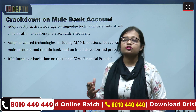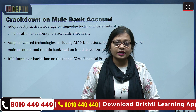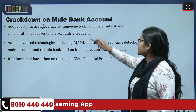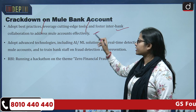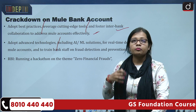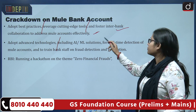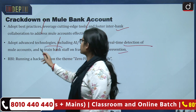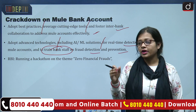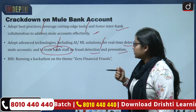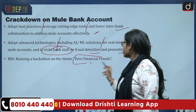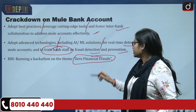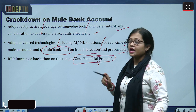The RBI is asking banks to be more vigilant and follow certain guidelines so that mule bank account numbers will not increase in future. Banks need to adopt best practices, leverage cutting-edge tools, and pursue interbank collaboration to address mule accounts effectively. They should adopt advanced technologies including AI/ML solutions for real-time detection of mule accounts. Bank staff also need to be trained on fraud detection and prevention, so that if they find something suspicious, they can detect it. RBI is also running a hackathon with the theme of zero financial frauds, as cyber fraud and cyber security threats are on the rise.